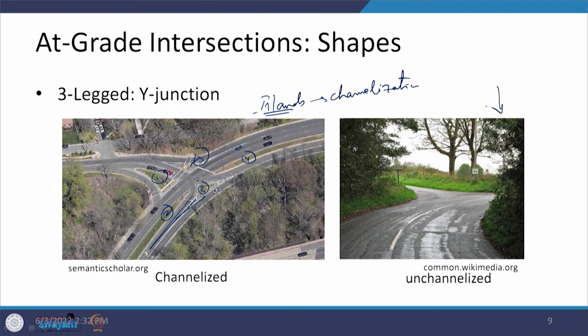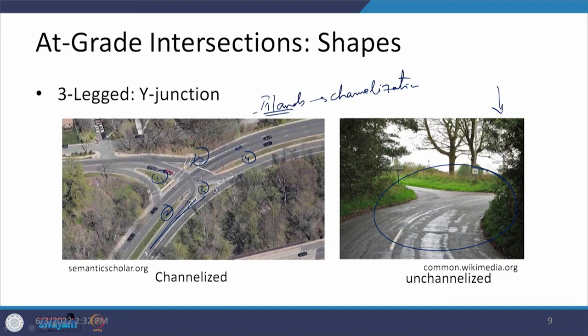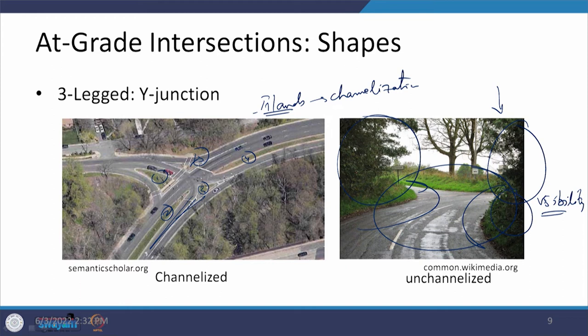Looking at one photograph, no such channelization has been provided, maybe because the traffic intensity in that area is not high. But one issue present is visibility — the bushes and trees are creating a visibility problem when taking turns, which may cause a hazard. We have to take care of this aspect, as discussed previously as part of alignment design and sight distances.